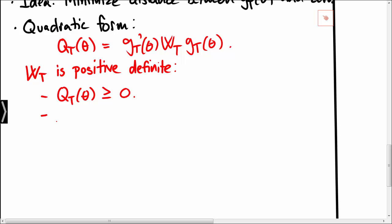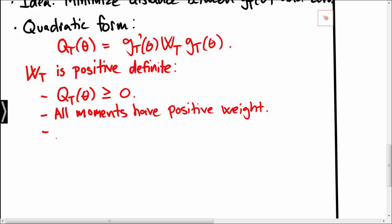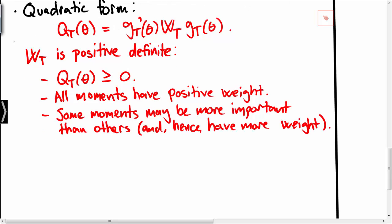The second implication of Wt being positive definite is that all moments have positive weight, meaning that we do not exclude any moments in order to obtain an estimate of theta. And lastly, by ensuring that Wt is positive definite we may allow some moments to be more important than others. So given the choice of Wt, which should be a positive definite matrix, we define the GMM estimator of theta as the argument that minimizes the quadratic form, meaning the argument that minimizes the distance between the moments gt and zero.